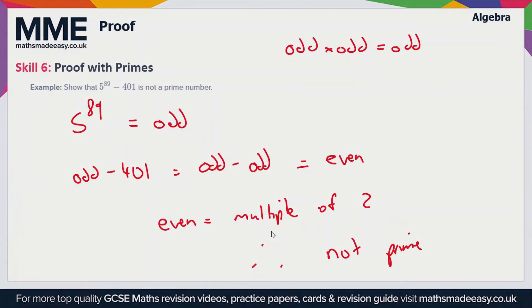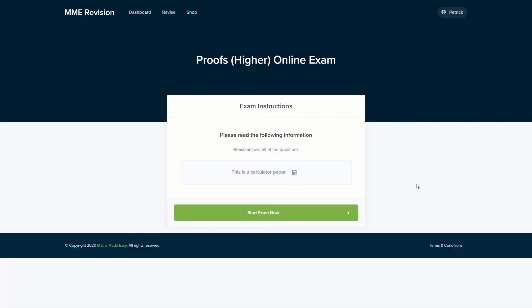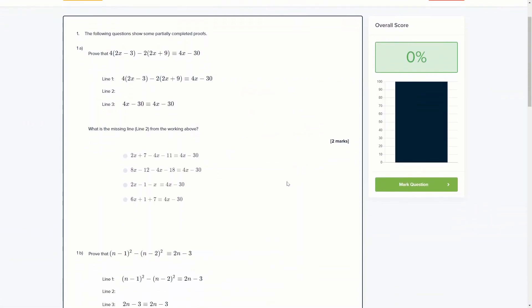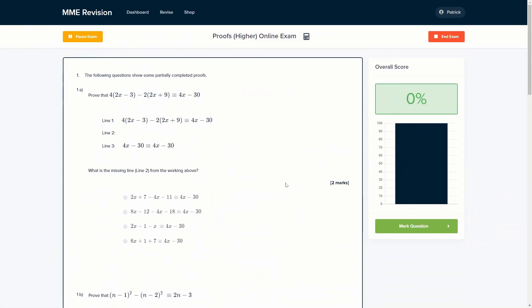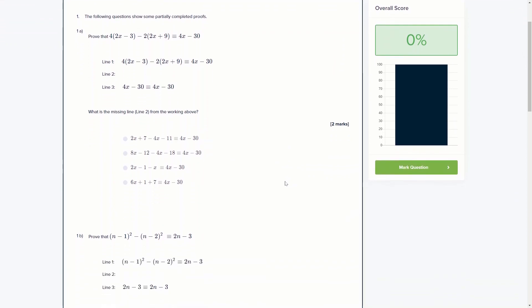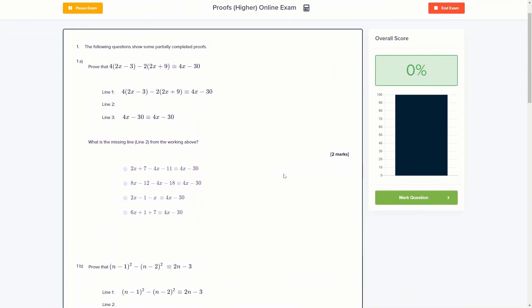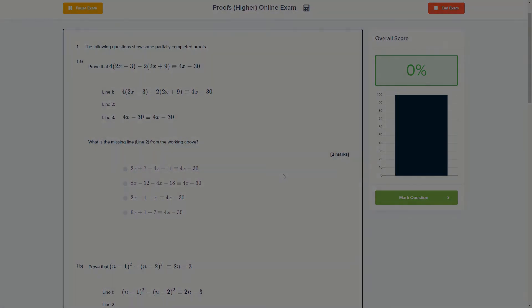If you want to practice some proof exam style questions you can do so in our online exam. This is available through our revision platform where you'll find loads of different questions to have a go at, all of which you'll get instant feedback on so you can keep track of your progress and find out what you need to do to improve. If this is something you're interested in, you can click the link below.